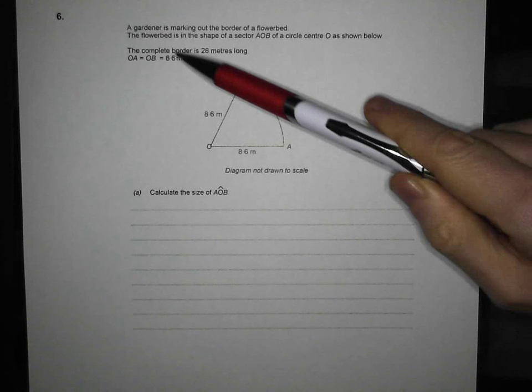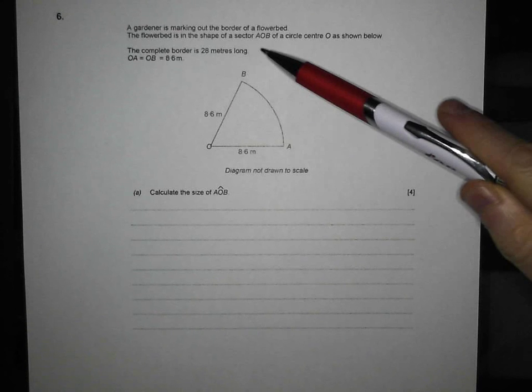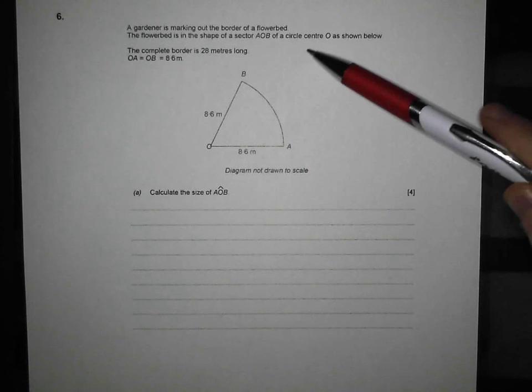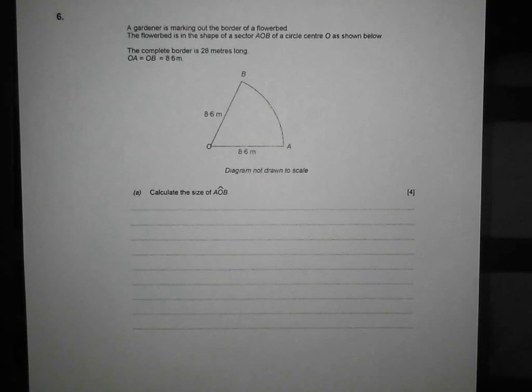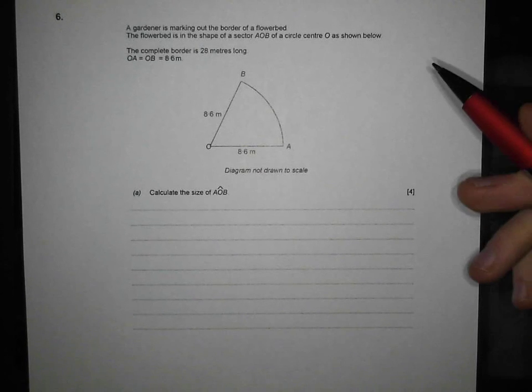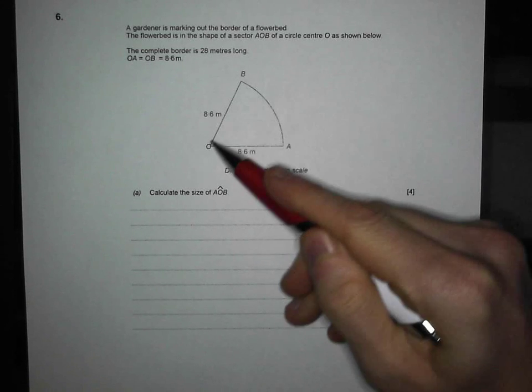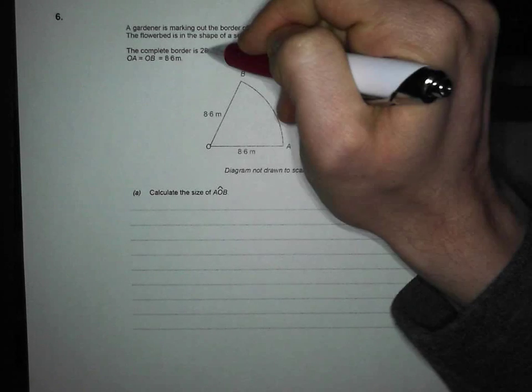A gardener is making out the border of a flower bed. The flower bed is in the shape of the sector AOB and the circle centre O is shown below. The complete border is 28 metres long. Now, just be careful here, that is the complete border all the way round is 28 metres long.